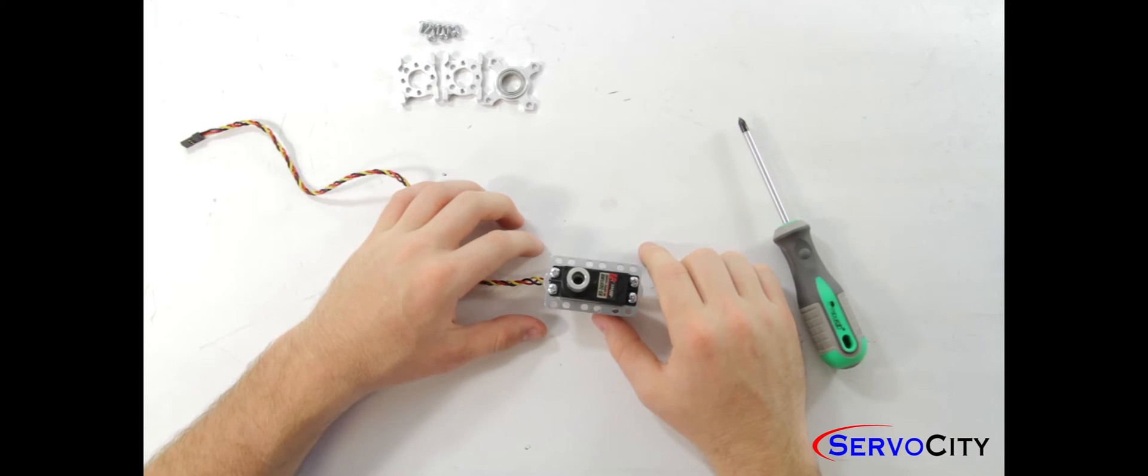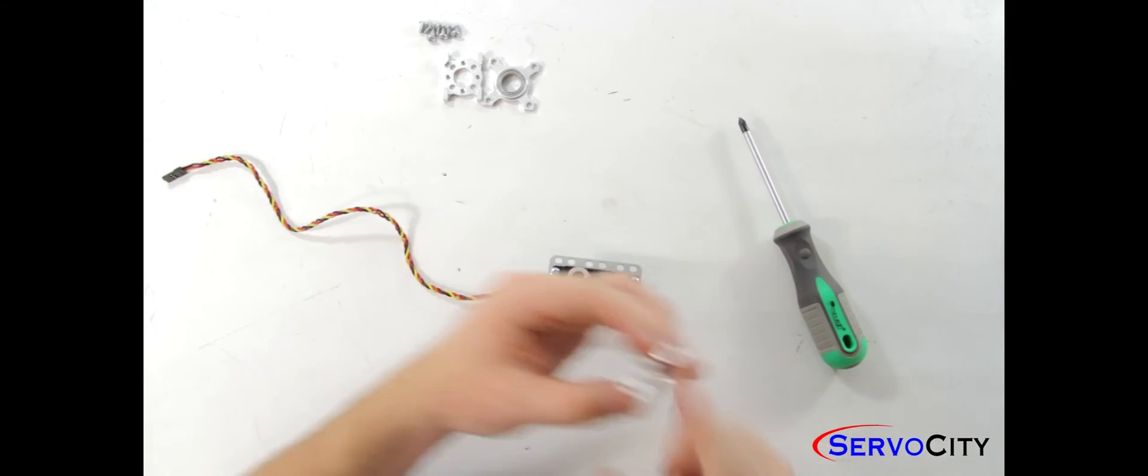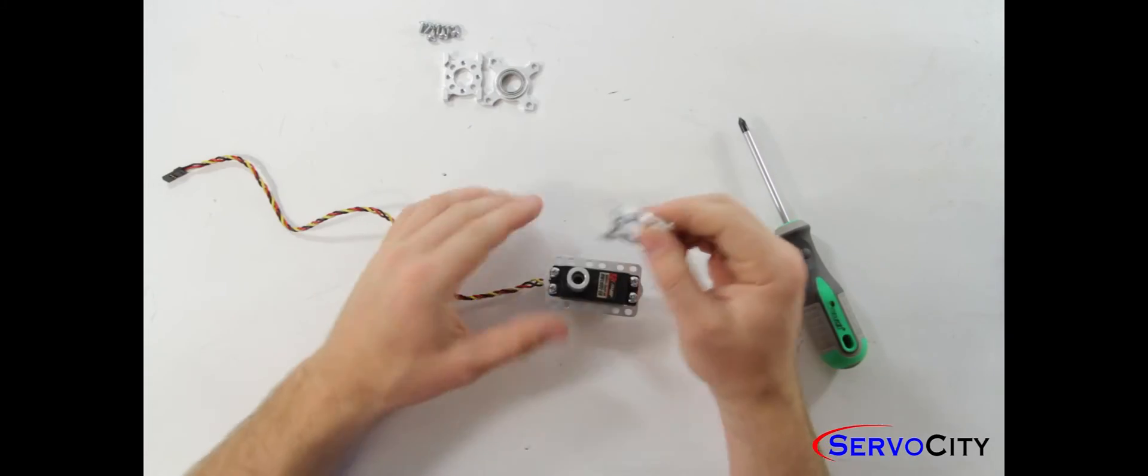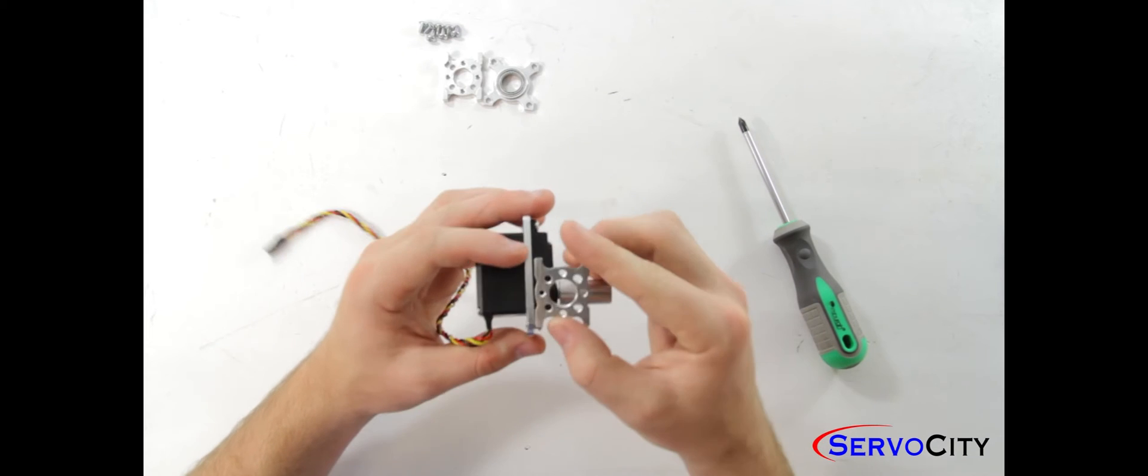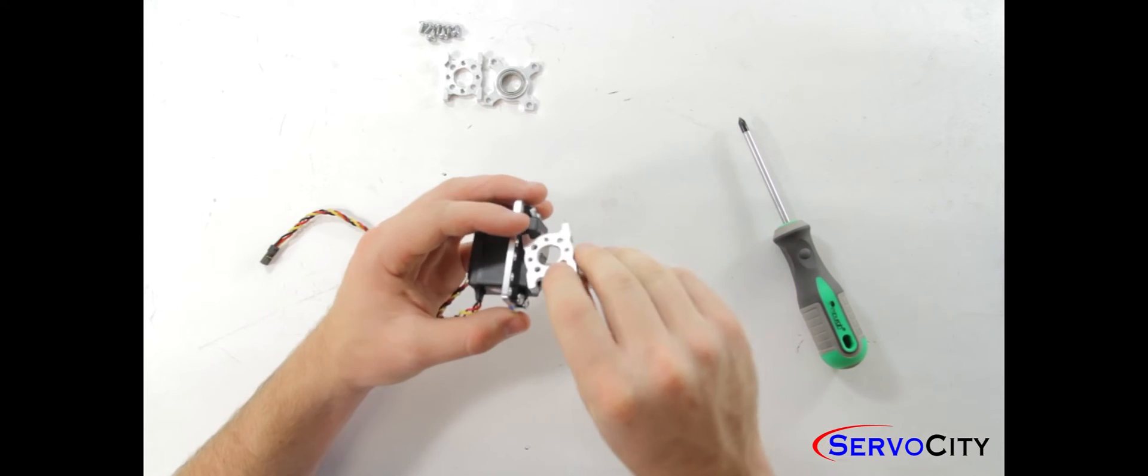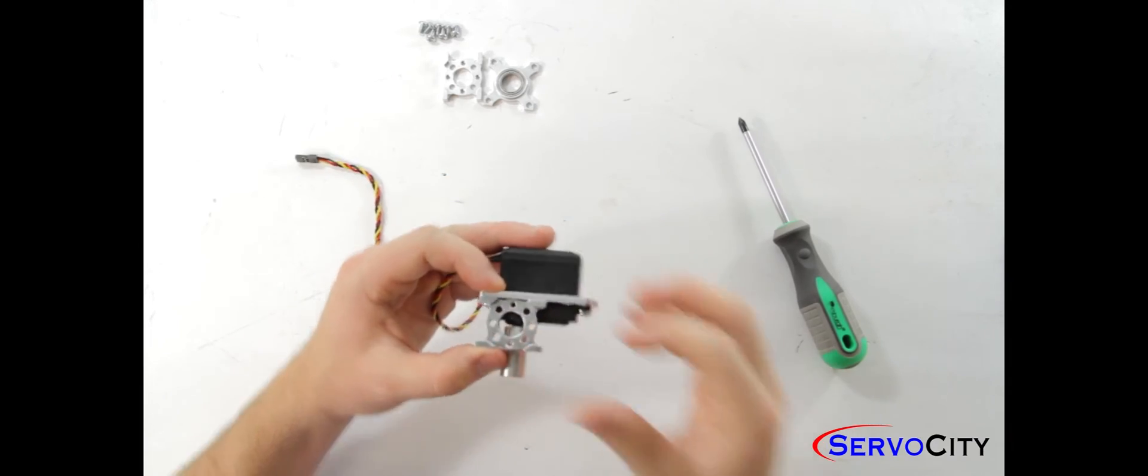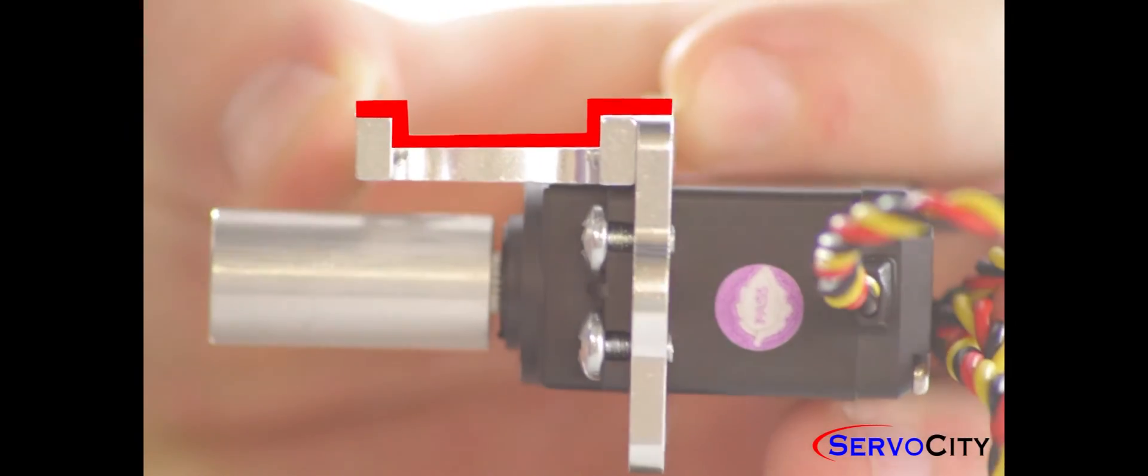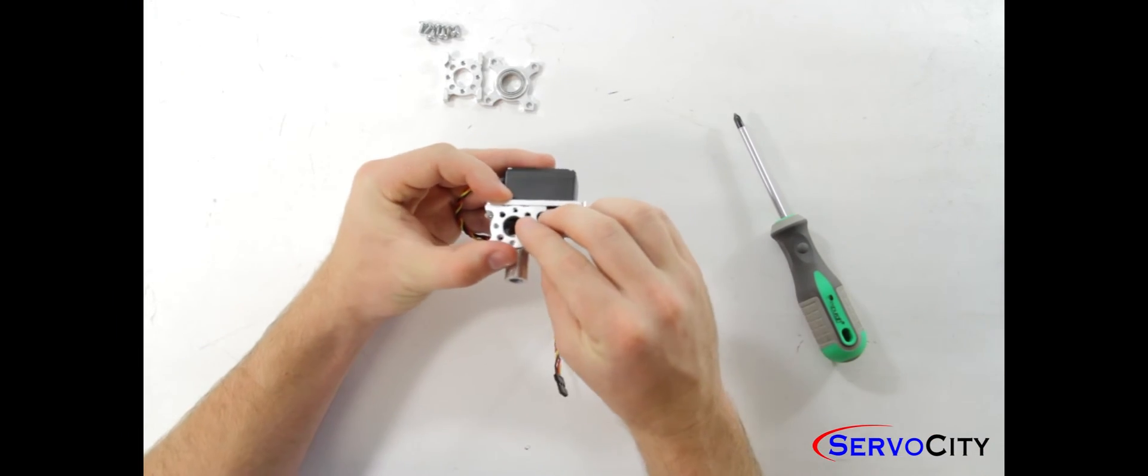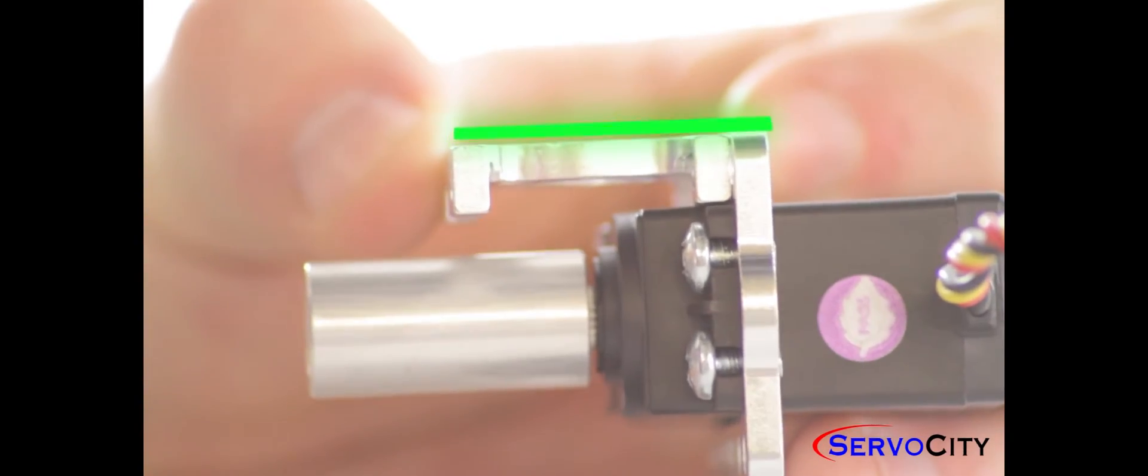Next we have two of our 90 degree quad hub mounts that we are going to use to attach to the base of our servo plate. You will notice that there are two ways in which you can orient the hubs when attaching them to the plate. The first of which being with the recess in the hub facing out away from the servo. The second way that you can attach it is with the hub and the plate flush on the outside.